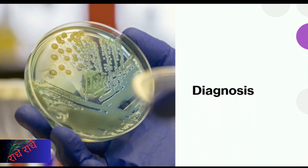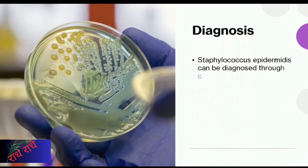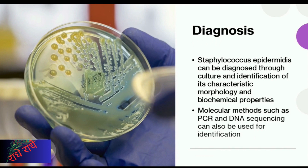Staphylococcus epidermidis is a gram-positive, non-motile, non-spore-forming bacterium that inhabits the normal human skin flora. Culture and identification of its characteristic morphology and biochemical properties are required for diagnosis, while molecular methods such as PCR and DNA sequencing can also be employed. These techniques allow for quick and accurate identification.